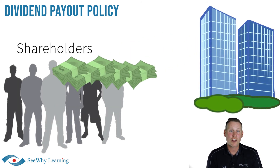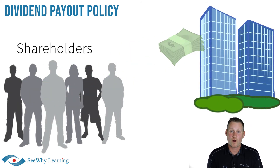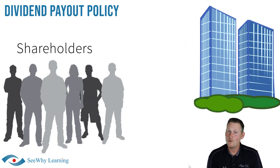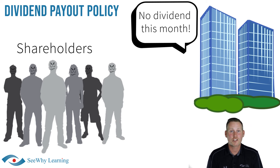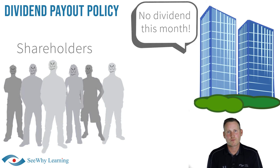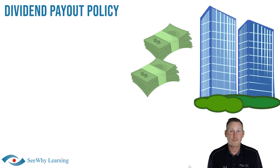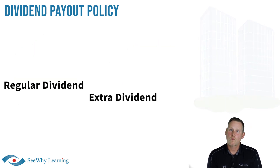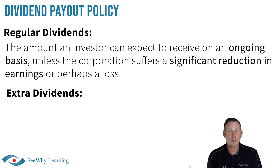As mentioned earlier, paying common share dividends and retaining earnings within the company both benefit the common shareholders. But if a company has been paying dividends, it will generally try to keep those dividends somewhat consistent. Investors can become accustomed to receiving a dividend and they do not like surprises. An elimination or reduction of a dividend could cause the share price to decline. So to help manage shareholder expectations, dividends can be classified as either regular or extra.